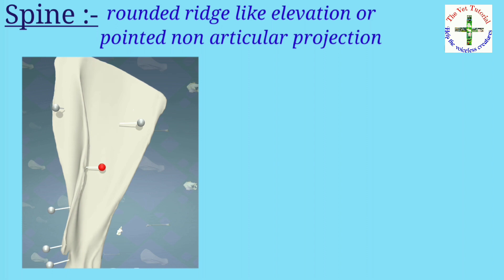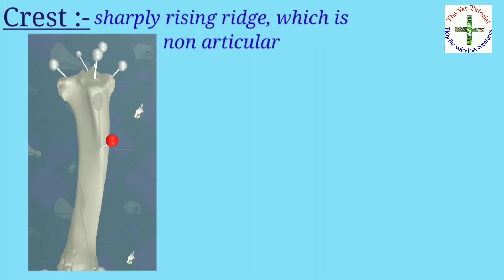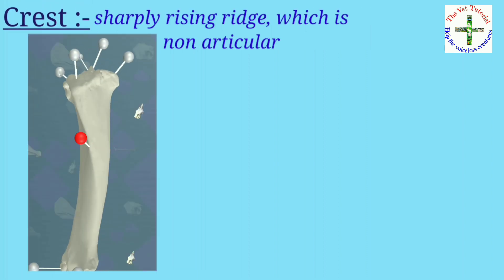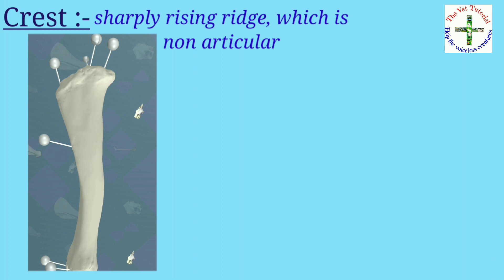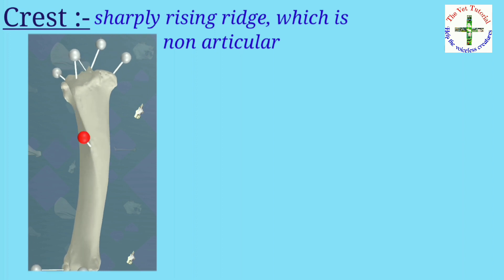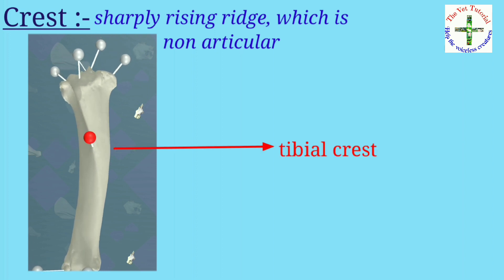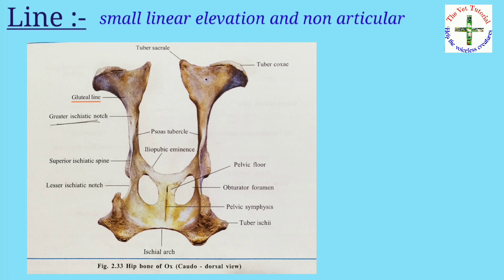Then spine — it is either a rounded ridge-like elevation or a pointed non-articular projection. Example: found in scapula. Then crest — it is a sharply raised ridge which is non-articular. Example: found in tibia and coccyx. Then line — it is a small linear elevation where the raised area is very small and non-articular. Example: found in scapula and coccyx.